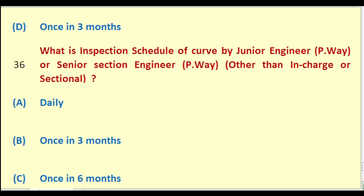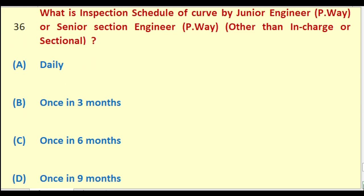What is the inspection schedule of curves by Junior Engineer Permanent Way other than in charge or sectional? Options: daily; once in three months; once in six months; once in nine months. The right answer is: once in six months.